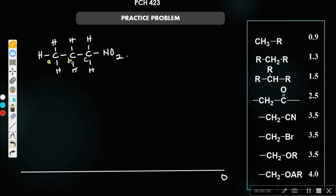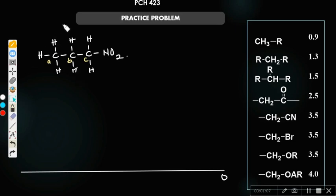Now, none of the protons are chemically equivalent because they are different protons entirely. Now, if you look at A very well, what is the neighboring atom to A? The neighboring group is this one, and they have two protons. So those two protons — you are going to add one to it, making it three. So A will be a triplet.